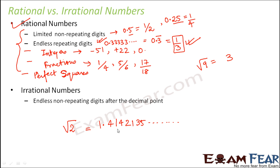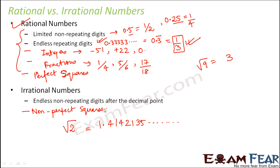We can say that all non-perfect squares are irrational. It's not only about √2 — it's about all non-perfect squares like √2, √5, or √7. They are all examples of irrational numbers. That's one category where we find irrational numbers.